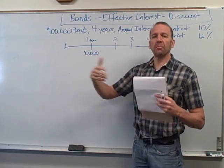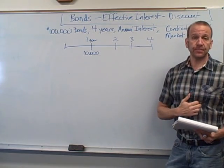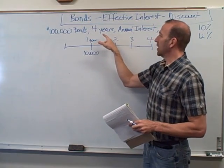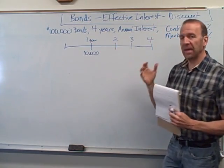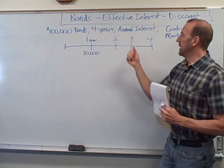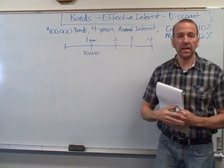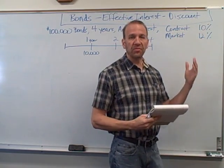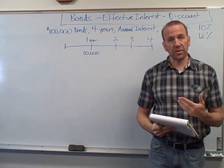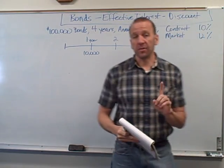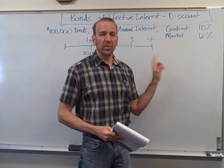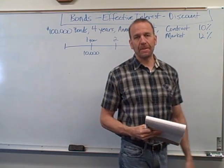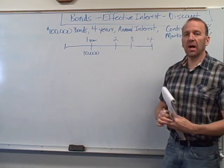This video covers the effective interest method on a discount. Here's the scenario: this corporation is issuing bonds - they're going to sell bonds and take on debt. There are $100,000 bonds total, for four years, so four years from now they'll pay back $100,000. We calculate interest annually. The contract rate on these bonds is 10%, so it pays 10% of $100,000, or $10,000 in interest every year. However, the market rate right now for a bond with this kind of risk is 12%.